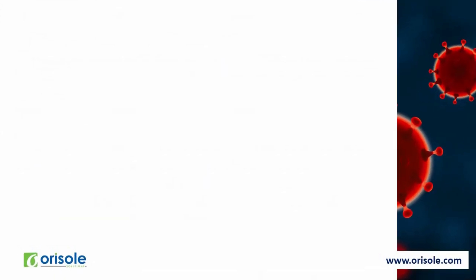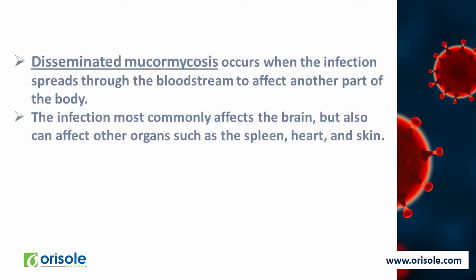Disseminated mucormycosis occurs when the infection spreads through the bloodstream to affect another part of the body. The infection most commonly affects the brain but can also affect other organs such as the spleen, heart and skin.